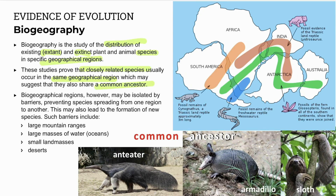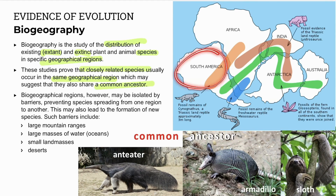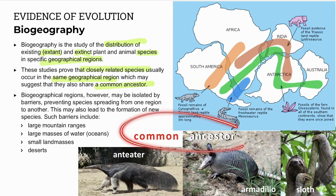For example, anteaters, armadillos, and sloths are all found in South America and parts of the North. They share genetic similarities that indicate a recent common ancestor. Biogeographical regions may also be isolated by barriers, which prevent species moving from one area to another and may lead to the formation of new species — speciation.